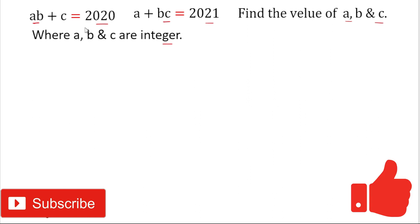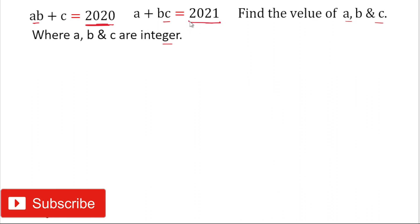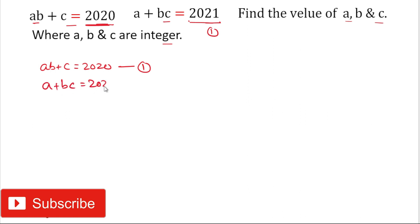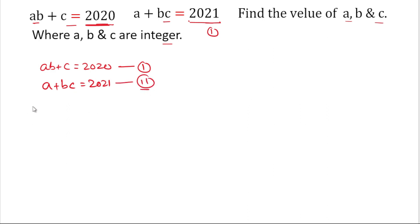For solving this problem, if you look carefully at the right-hand side of the equations: in the first equation it is 2020, and in the second it is 2021. So if we subtract equation 1 from equation 2 we'll get a difference of 1. Let us label: ab + c = 2020 as equation 1, and a + bc = 2021 as equation 2.